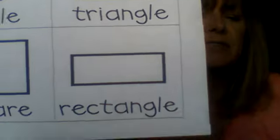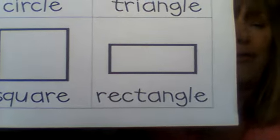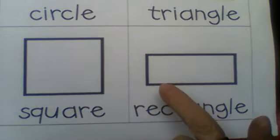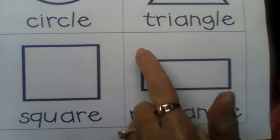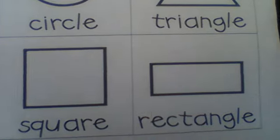And then a rectangle has four sides. One, two, three, four. It has four vertices. One, two, three, four.